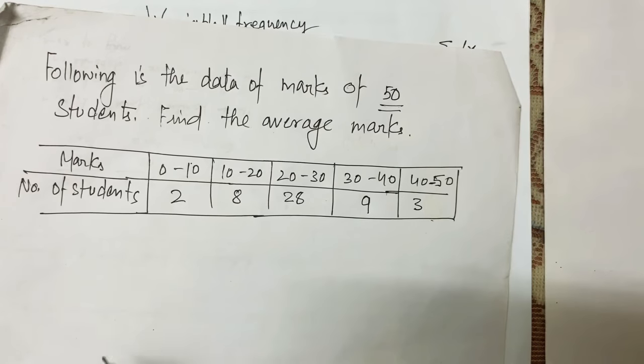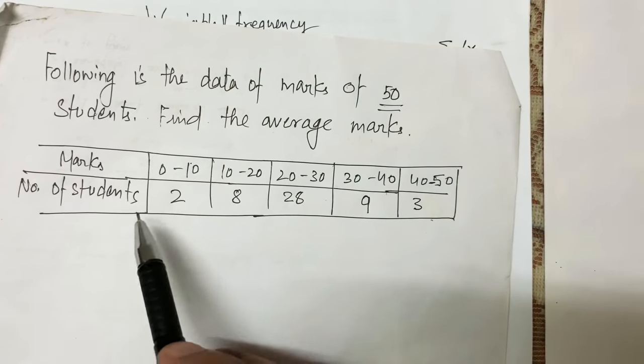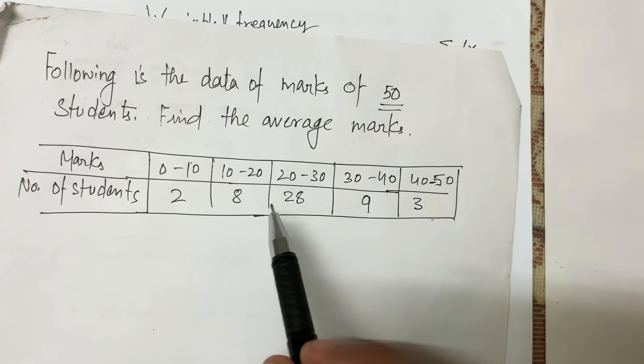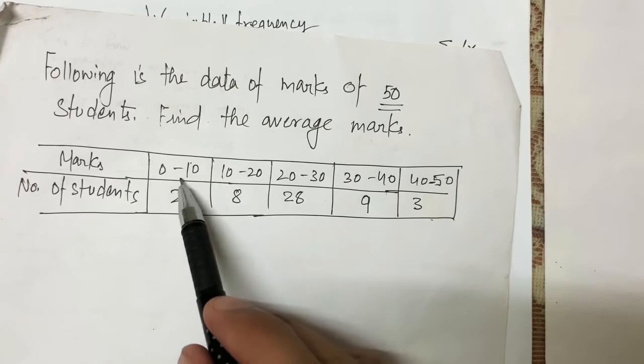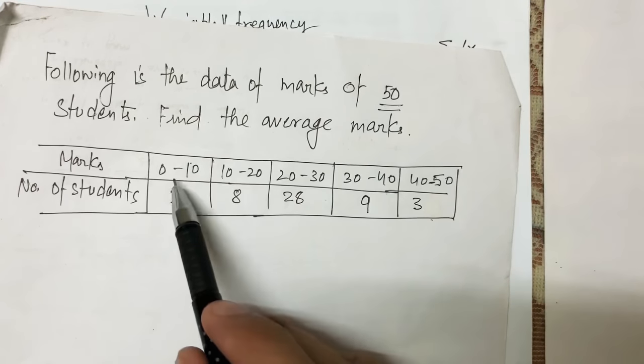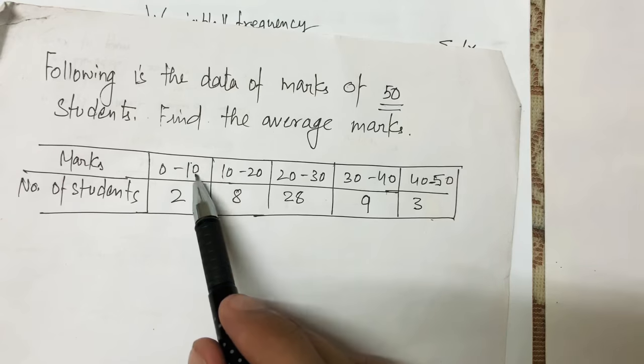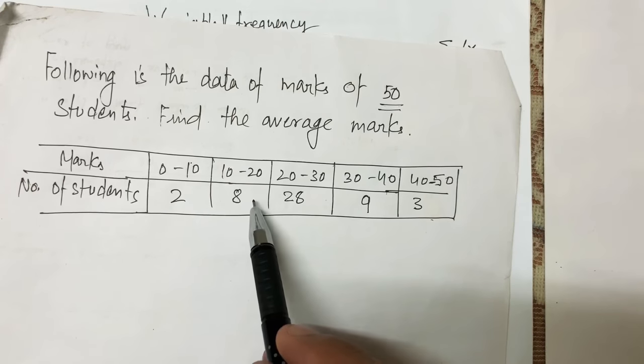This is an exclusive distribution, which means the upper limit of each class is excluded. For example, there are two students scoring between 0 to 10 marks, and if somebody is scoring exactly 10 marks, the student falls into the next class. My objective is to find out the average marks.